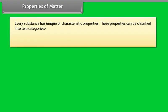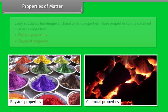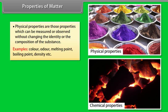Every substance has unique or characteristic properties. These properties can be classified into two categories, physical properties and chemical properties. Physical properties are those properties which can be measured or observed without changing the identity or the composition of the substance. Examples: Color, Odor, Melting point, Boiling point, Density, etc.